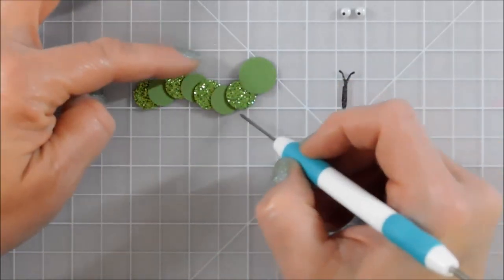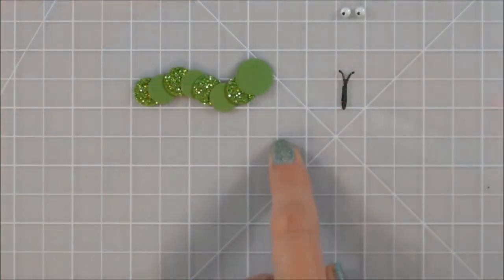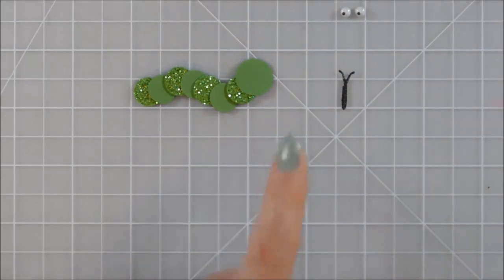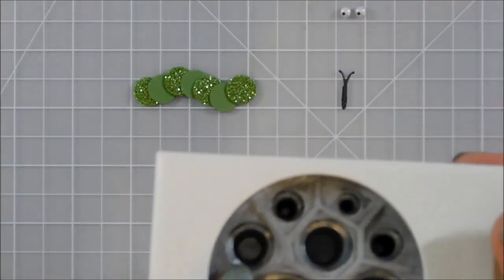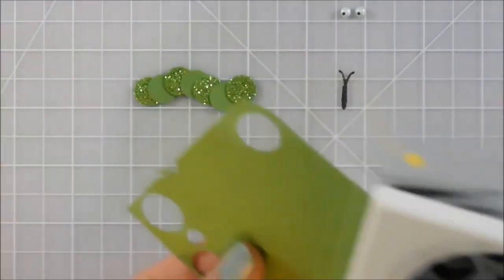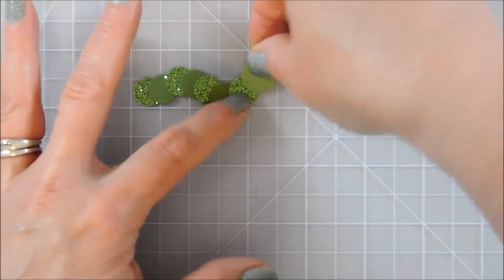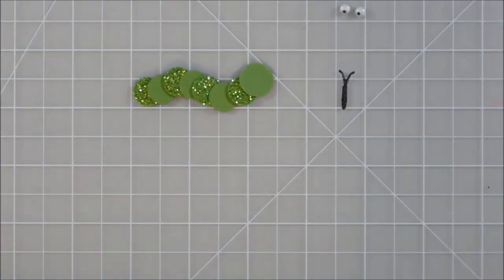So I want my caterpillar kind of curving like he's crawling along. And you know what? I punched out the wrong size circle actually. This one here up toward the end is the one that I meant to use which is the five-eighths, just barely bigger than our body segments.